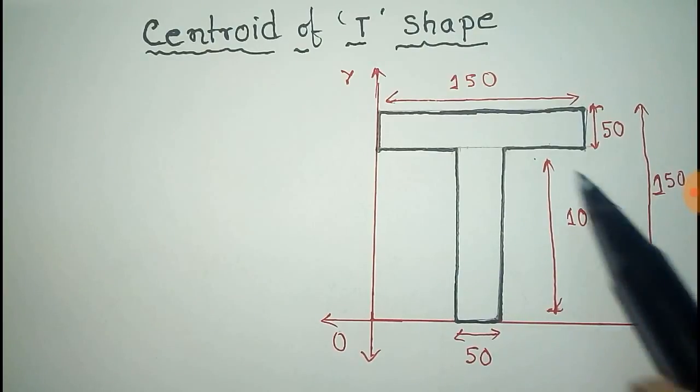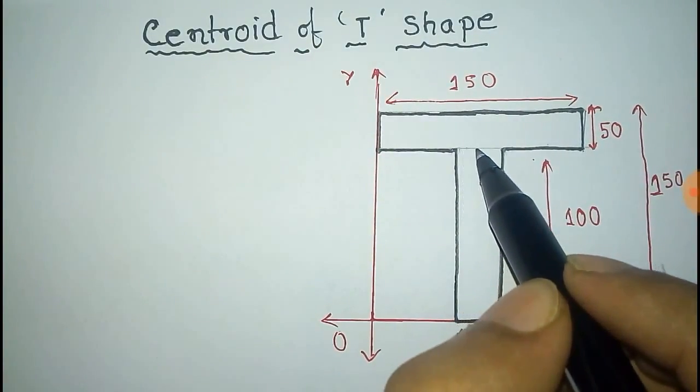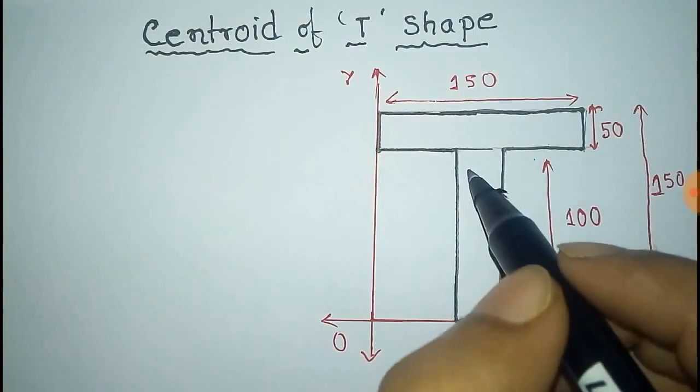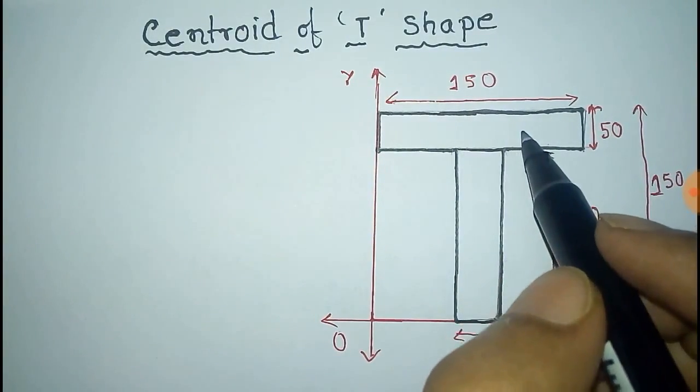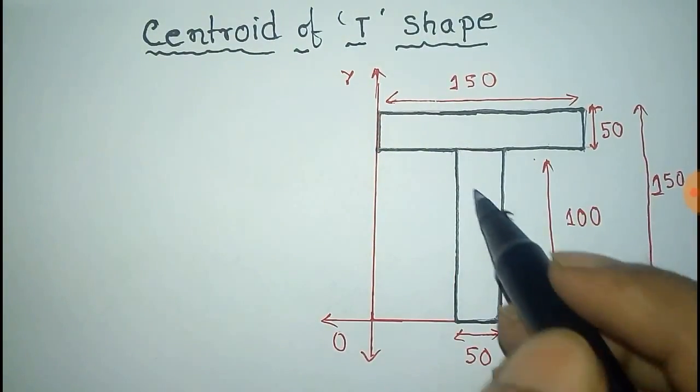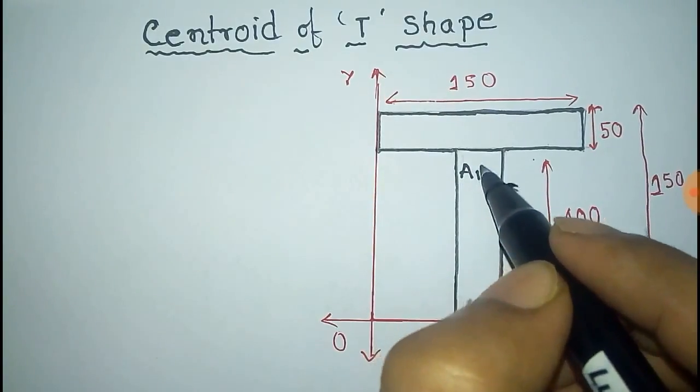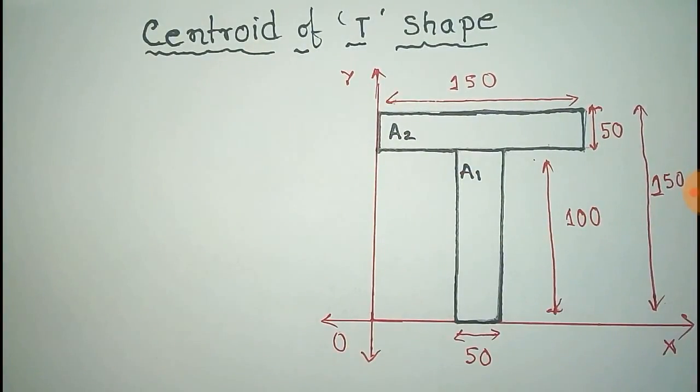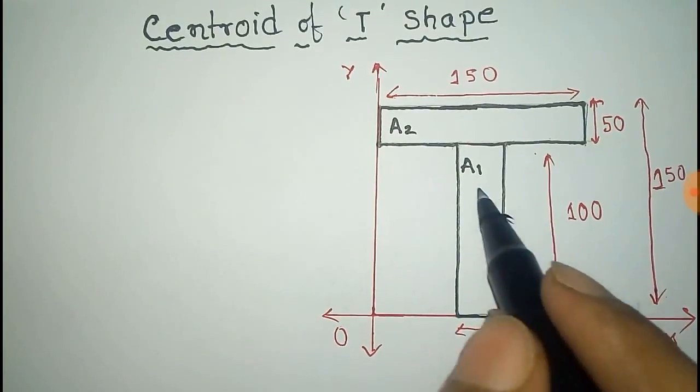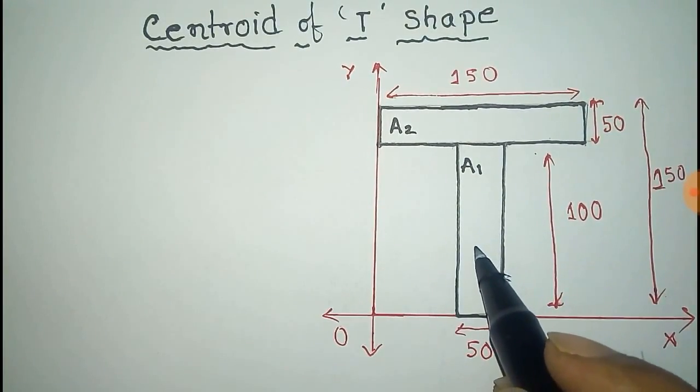We divide it into these two rectangles and name them as A1 and A2. Now we have two rectangles. For the first rectangle A1, the center of mass will be present at this point (x1, y1).